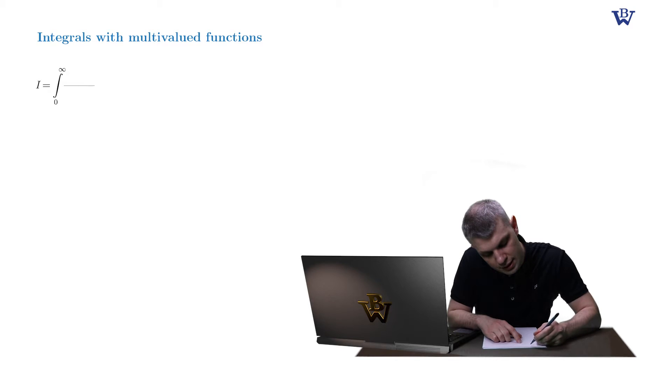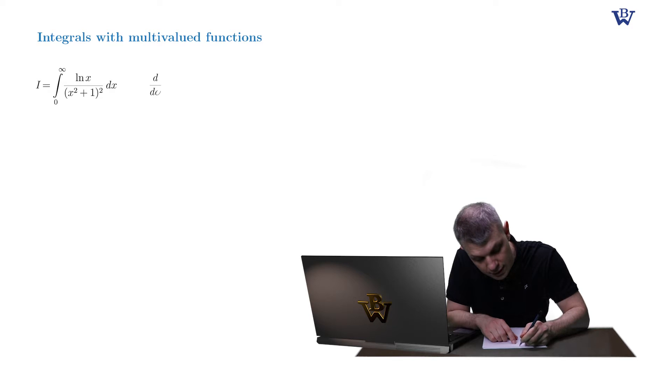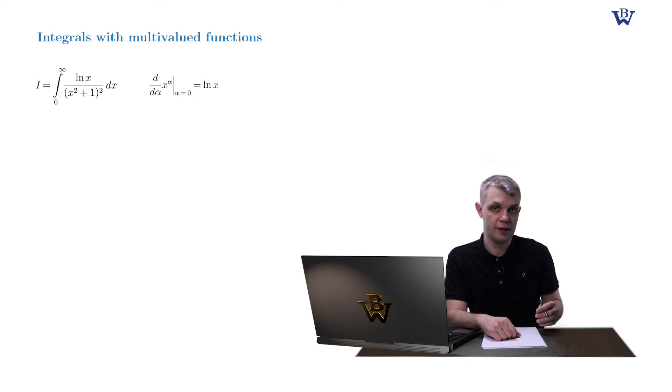The integral from 0 to plus infinity log x divided by (x squared plus 1) squared dx. It is important to note that you can get rid of the log function altogether by changing it into x to the alpha expression and then differentiating it with respect to alpha and sending alpha to 0 at the end of the calculation. And obviously, you obtain logarithm of x in the end. So one way to deal with the integral will be to substitute log x with x to the power of alpha and then compute the integral using the technique outlined in the previous example. And then differentiate the answer with respect to alpha and set alpha 0 at the end of the calculation.